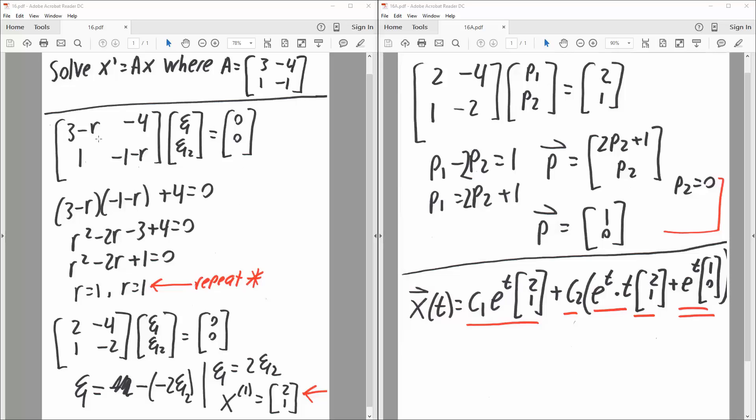And so we'll multiply the diagonals. So 3 minus r times negative 1 minus r, minus parenthesis 1 times negative 4, so plus 4, is equal to 0.